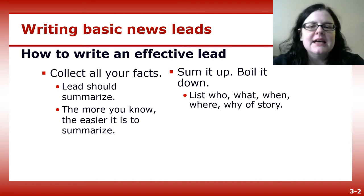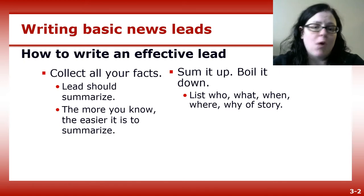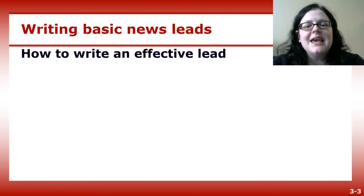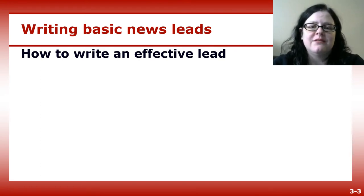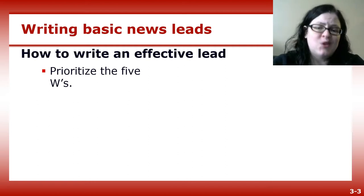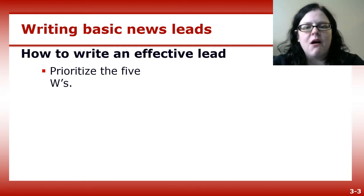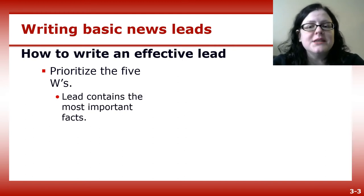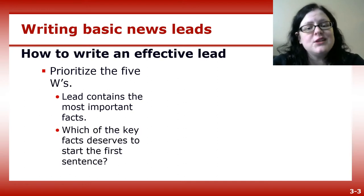A good lead lists the who, what, when, where, and why of the story, although maybe not all in the same one or two paragraphs. If your lead contained every important piece of information, it would be too long to attract readers. You need to prioritize the Ws. Is the most important piece of information that something happened, where it happened, who it happened to, or that it happened at all? The most important facts are the ones that deserve to be in the lead, and which ones you emphasize depend on the story.